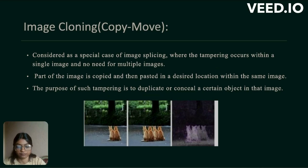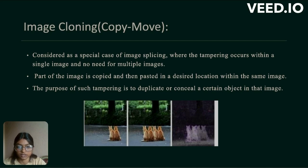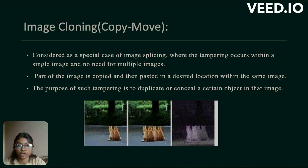Next is image cloning, considered as a special case of image splinting where the tampering occurs within a single image with no need for multiple images. Part of the image is copied and then pasted in a desired location within the same image. The purpose of such tampering is to duplicate or conceal a certain object in that image.